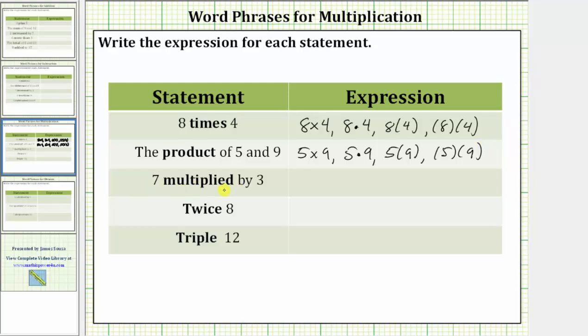Next, we have seven multiplied by three. It's pretty clear here that multiplied represents multiplication. Because seven is multiplied by three, the expression is seven times three.